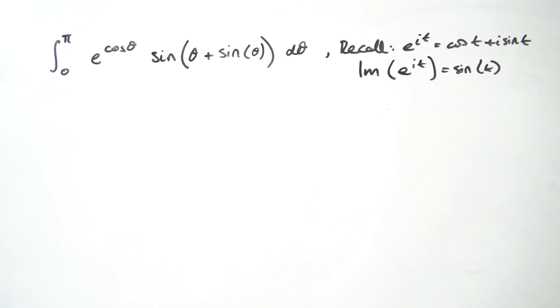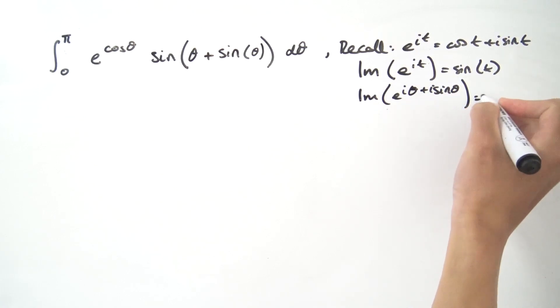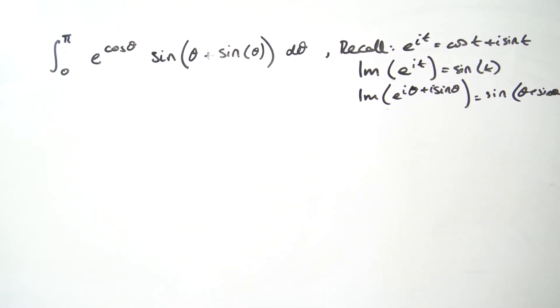But we don't just want sine of t, we want sine with all this junk on the inside, so let's substitute t for that. If we have the imaginary part of e to the i theta plus i times the sine of theta, then this is going to give us the sine of theta plus sine of theta, just as we wanted.